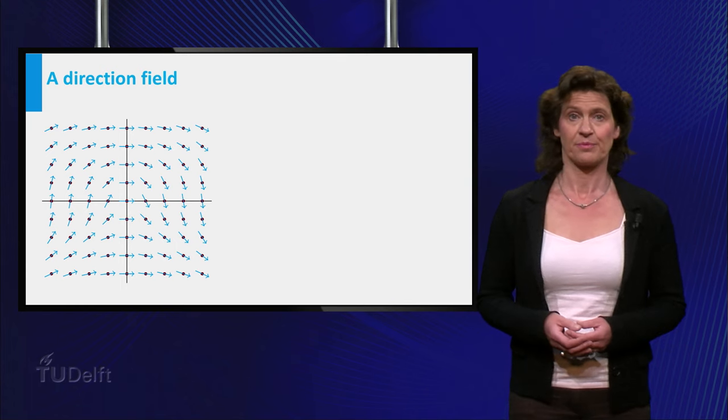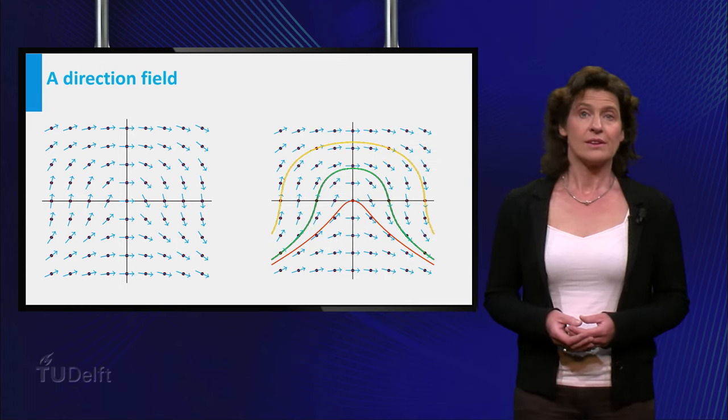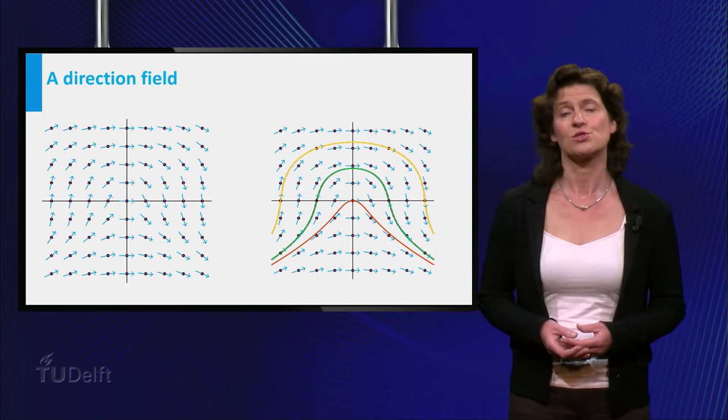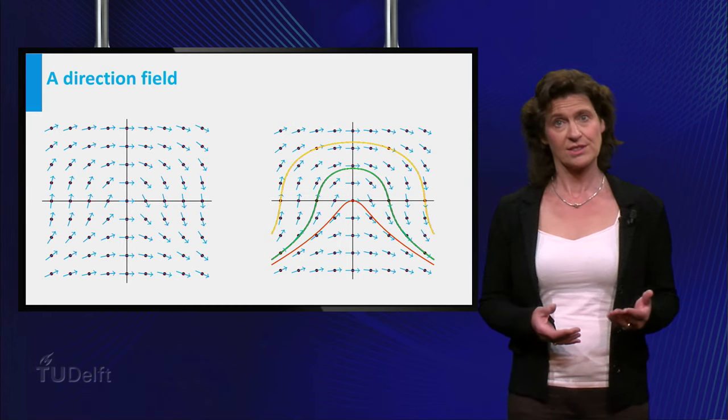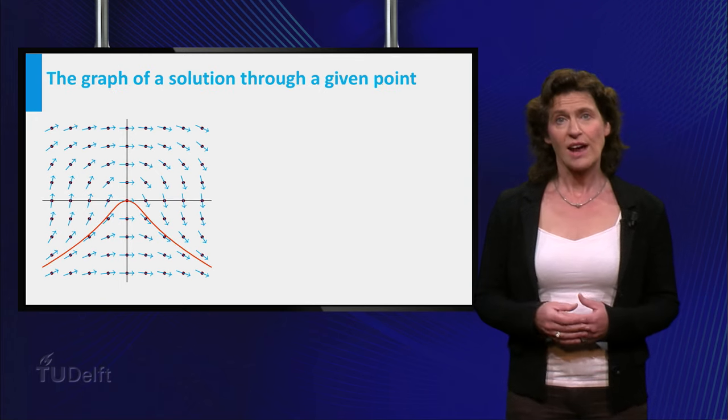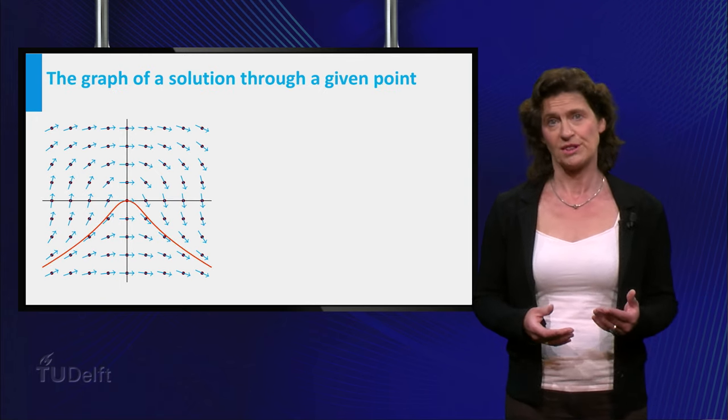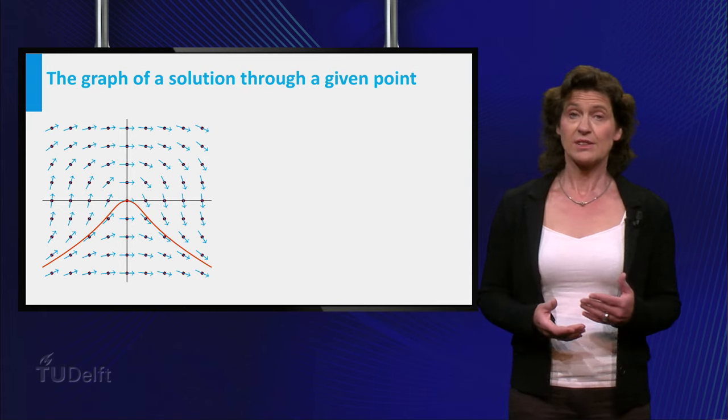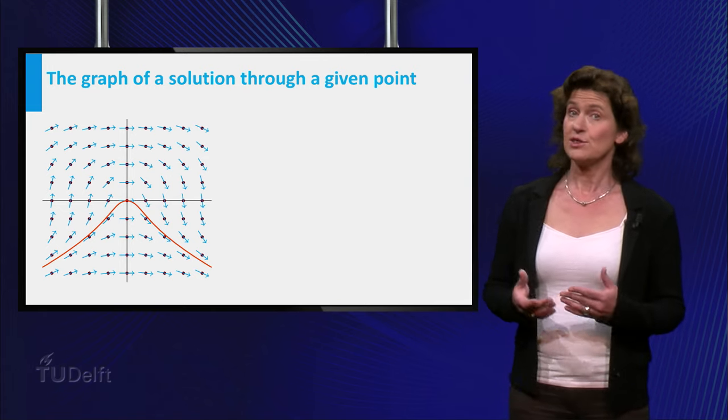Now what do you see in this picture? You can draw the graph of a solution with given starting points by following the direction field like this. So the graph corresponding to the solution of the differential equation which passes through the origin is the orange one. The solution which passes through the point has the green graph.